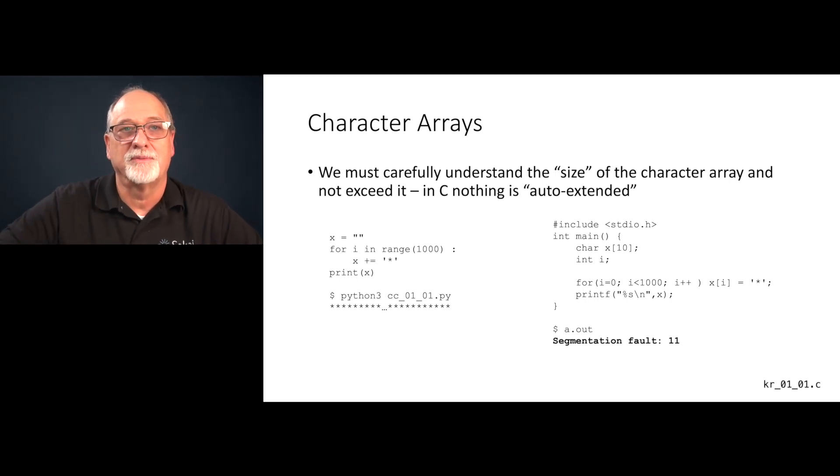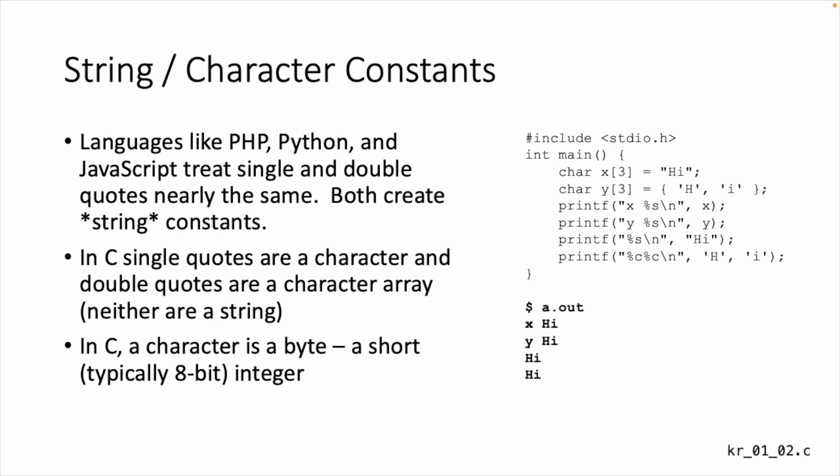String constants and character constants. Strings and characters in most languages, Java is a little different, but PHP, Python and JavaScript treat single and double quotes roughly the same and they create string constants. C doesn't have a multi-character thing that has a length. It has an array of characters that has a zero character at the end of it. In C, single quotes are a single character and double quotes are a character array. A double quote with one character in it is actually two bytes because it's the character and the string ending, whereas in Python a string has a length. There's a special character that we use for an ending.